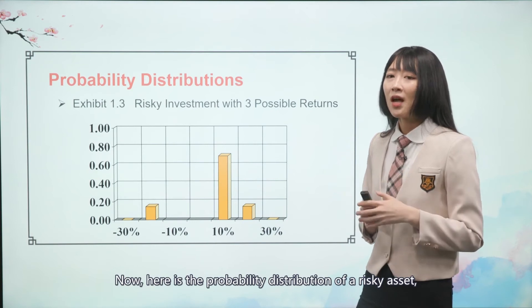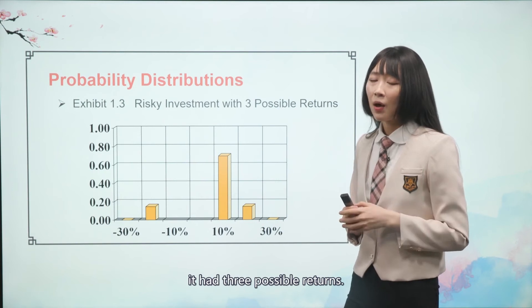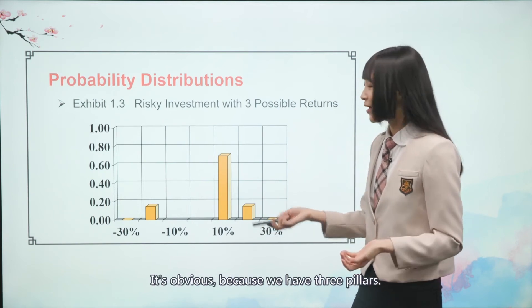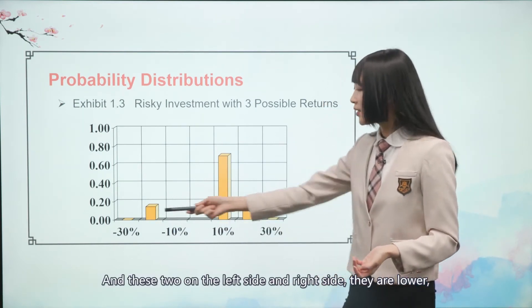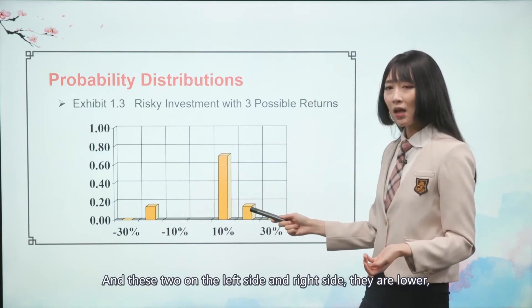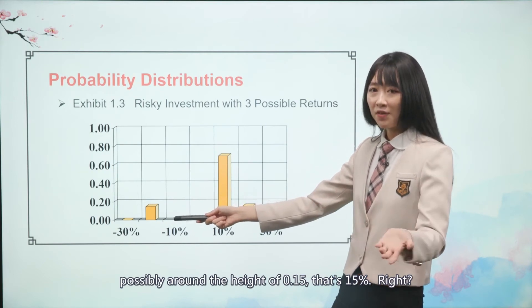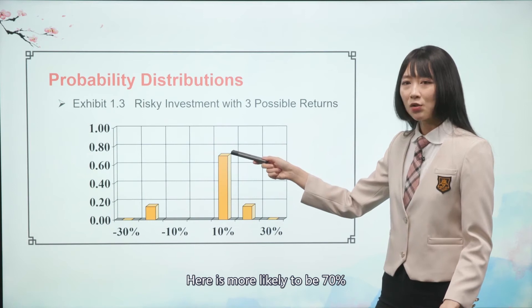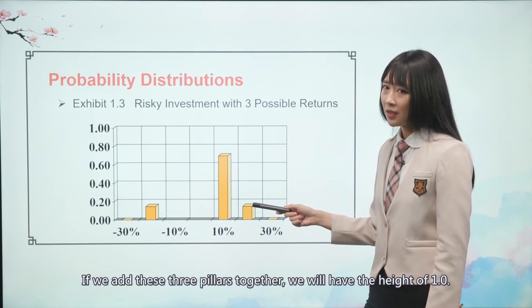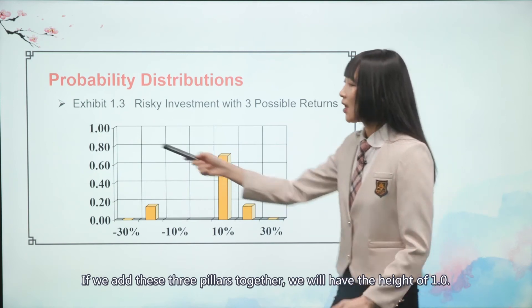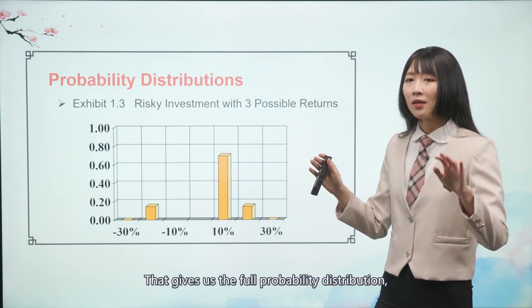Here is the probability distribution of a risky asset. It has three possible returns — it's obvious because we have three pillars. But the height is different. These two on the left and right sides are lower, possibly around a height of 0.15. The middle pillar is more likely to be 70%. If we add these three pillars together, we will have a total height of 1.0, giving us the full probability distribution.